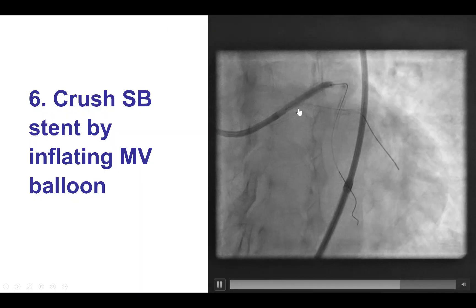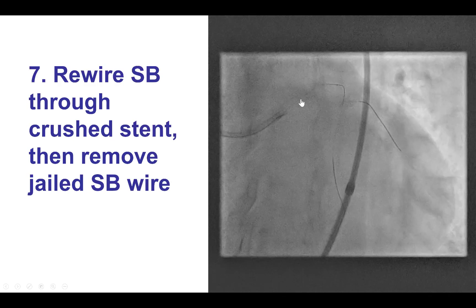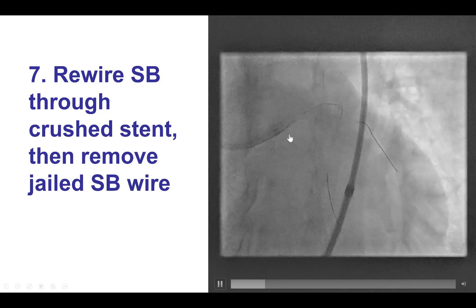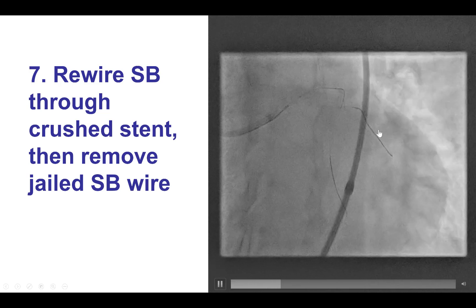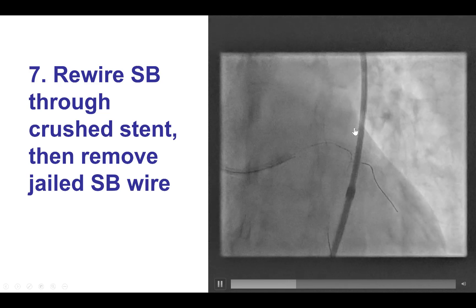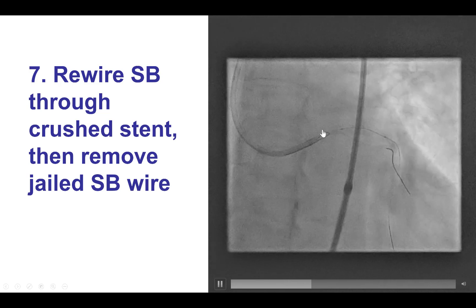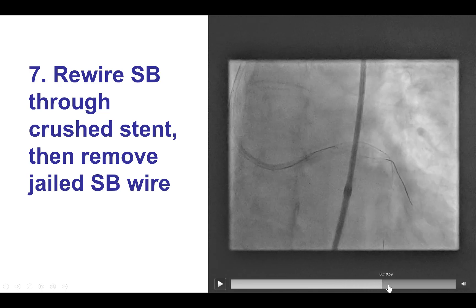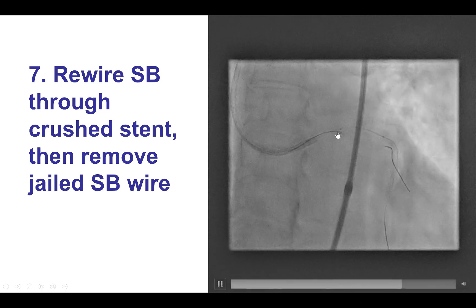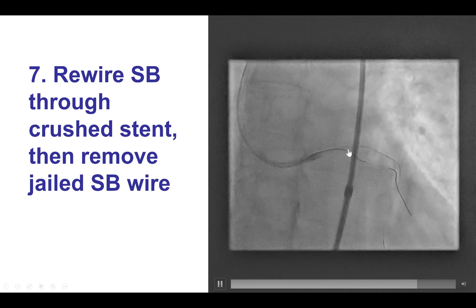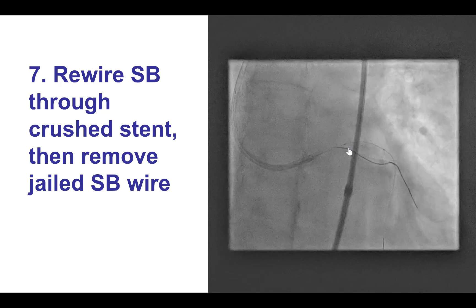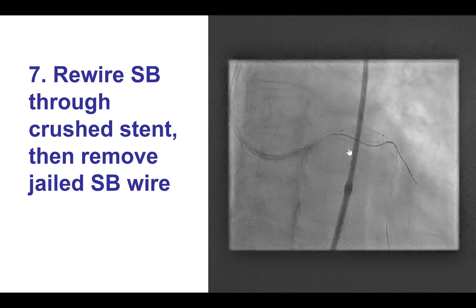The next step is to crush the side branch stent, which was done by inflating the balloon in the LAD. Then to rewire into the side branch, we jailed the side branch wire, which can help as a marker about where to wire with the new guide wire. Wiring was challenging but eventually successful. We typically try a workhorse wire initially, and if it doesn't work, we switch to a polymer-jacketed wire.